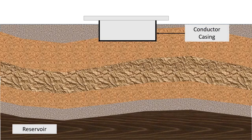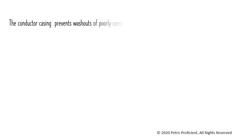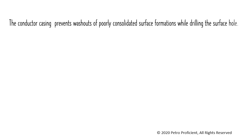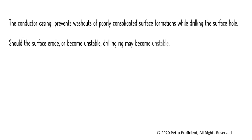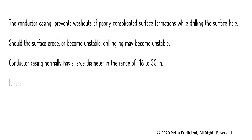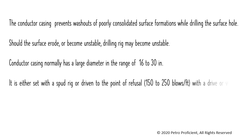Formations near the surface tend to cave in, therefore conductor casing is installed at surface. The conductor casing prevents washouts of poorly consolidated surface formations while drilling the surface hole. Should the surface erode or become unstable, the drilling rig may become unstable. Conductor casing normally has a large diameter in the range of 16 to 30 inches. It is either set with a spud rig or driven to the point of refusal with a drive or vibration hammer. Setting depths are normally 90 to 200 feet and rarely deeper than 300 feet.